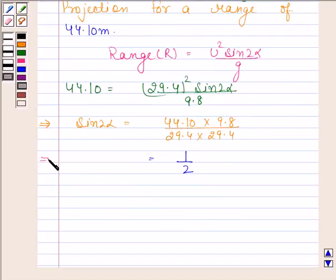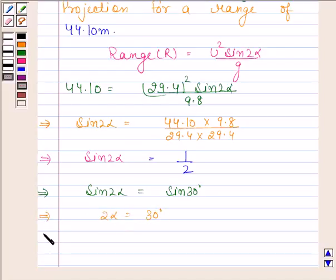So sine 2 alpha equals one-half, which means sine 2 alpha equals sine 30 degrees. This implies 2 alpha equals 30 degrees, and therefore alpha equals 15 degrees.